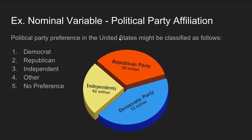One example of a nominal variable is political party affiliation. In the United States, political party preference might be classified into Democrat, Republican, Independent, Other, or No Preference, and every individual can be classified into one of these categories. They are mutually exclusive — if you're a Republican, you don't fit in the Democrat category — and exhaustive, in that everyone fits into one of the categories.